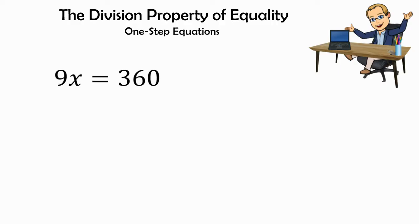When we're solving one-step equations, we look at it and notice that it is the division property of equality. When we have this first problem, it's 9x equals 360.